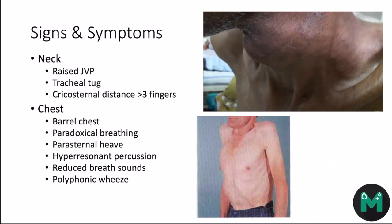Moving on to the chest, first inspect for hyperinflation, described as a barrel chest. This occurs due to an increase in lung compliance and end-expiratory volume because of loss of elastic recoil. You may also note paradoxical breathing or intercostal drawing. On palpation, you may feel a parasternal heave due to right ventricular hypertrophy, and there may be hyper-resonant percussion due to areas of emphysema and bullae.